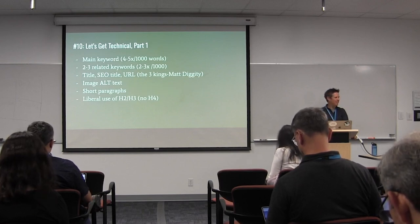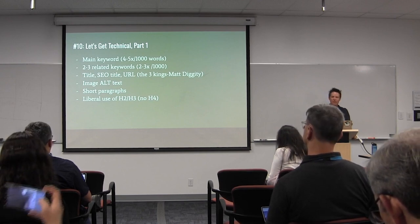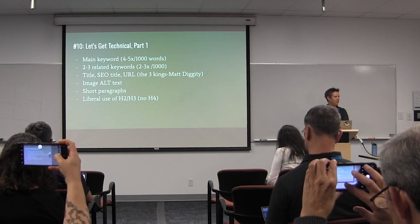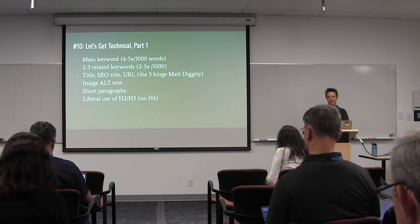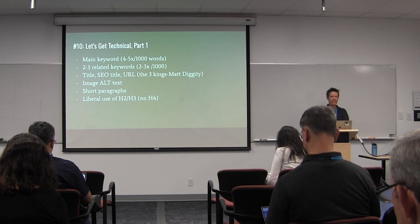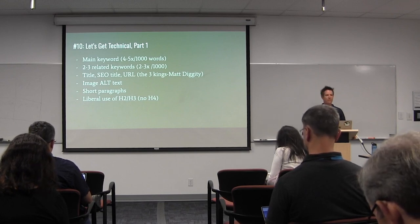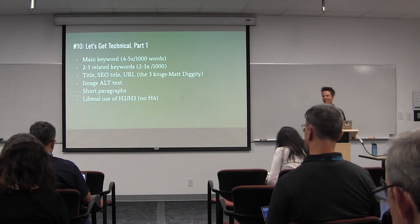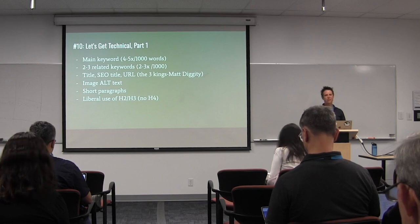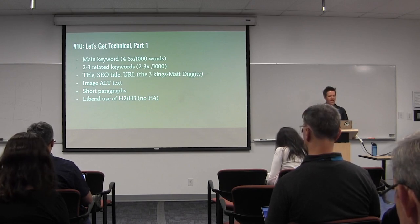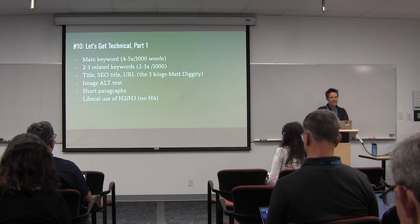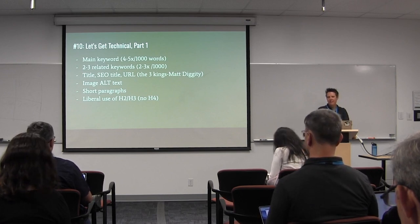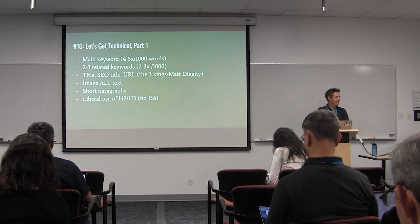Let's get technical. Technical SEO isn't really my expertise, but here are a few basics. Put the main keyword you're focusing on about four to five times per thousand words. Use two to three related keywords, each about two to three times per thousand words. Matt Diggity, kind of the king of SEO, calls these the three kings: the title, the SEO title, and the URL. He says to put slightly different variations of your keyword in each of these — not exactly the same but a little bit different.